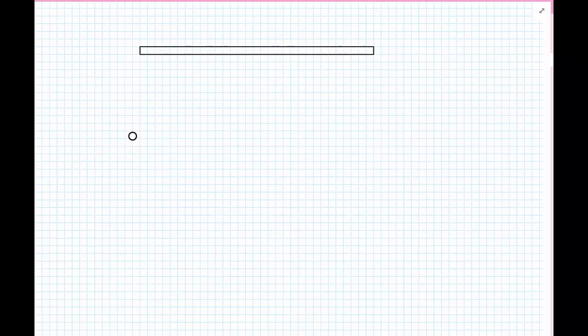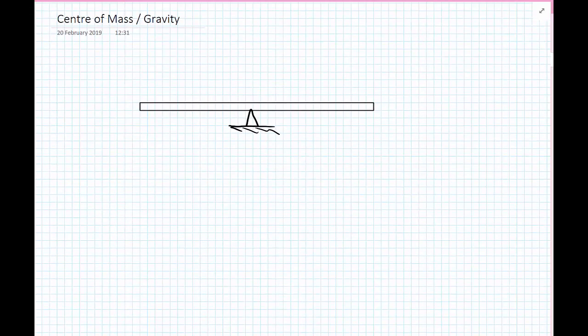So to remind ourselves, we could imagine having a seesaw at a playground. If you have two people of equal weight and equal distance from the pivot point of the seesaw, then the seesaw would remain in equilibrium.